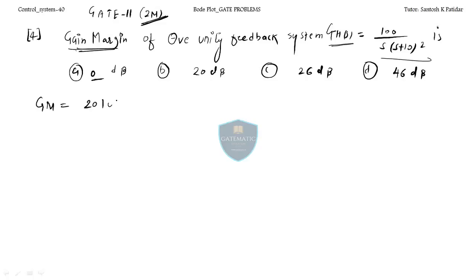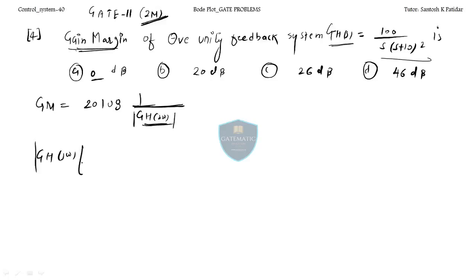The gain margin in dB is 20 log|GH(jω)|. You need this magnitude at the phase crossover frequency ω_pcf. The phase crossover frequency is where the phase φ equals minus 180 degrees. So we first calculate ω_pcf.